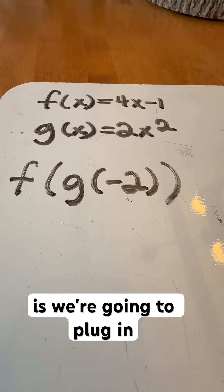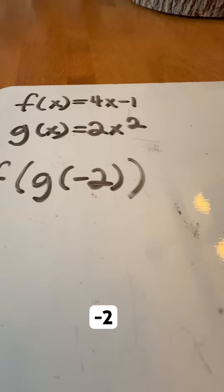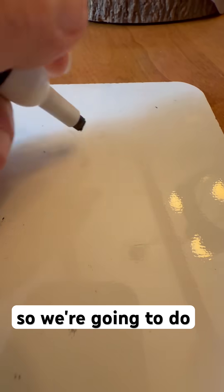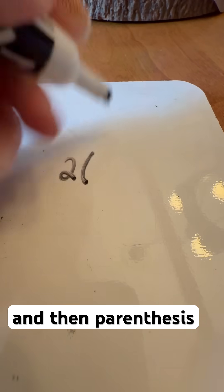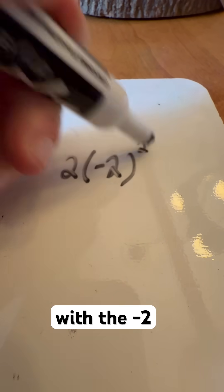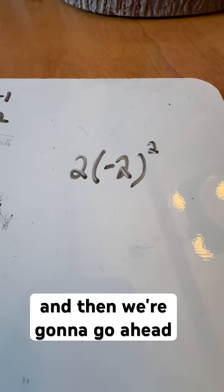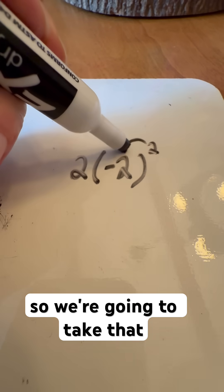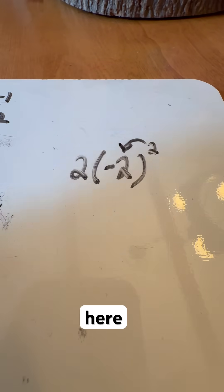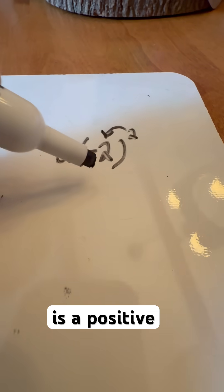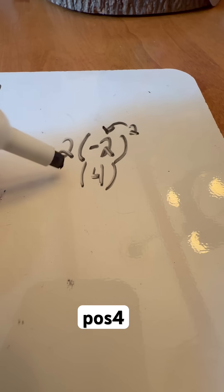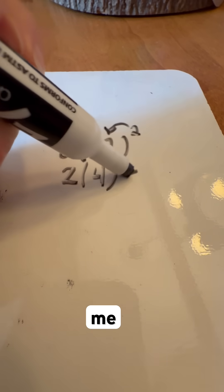So we're going to plug in the negative 2 in this equation. We're going to do 2 and then in parentheses, we're going to substitute in x with the negative 2, and then solve. We're going to take that exponent and apply it right here. Negative 2 times negative 2 is a positive 4, and positive 4 times 2 gives me 8.